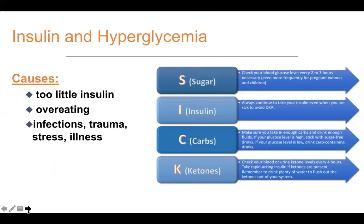Hyperglycemia is generally caused by the opposite: too little insulin, overeating, infections, trauma, stress, and illness. Infections produce counter-regulatory hormones like cortisol and epinephrine that drive up blood sugar. Even people without diabetes may develop hyperglycemia during stress or illness, and illness may cause hyperglycemia even days before symptoms develop. So people with diabetes may notice their blood sugar getting high and then a few days later actually get sick.